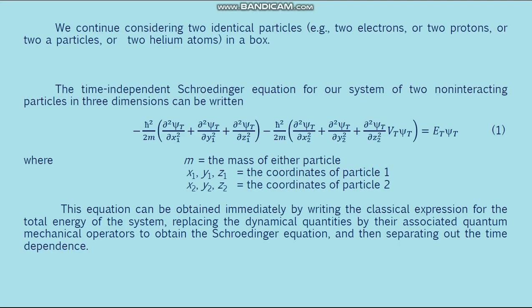We continue considering two identical particles — for example, two electrons, two protons, or two helium atoms in a box. To simplify the argument, we assume we can neglect the interactions between the particles. They will bounce between the walls of the box but will not scatter from each other. Despite this simplification, the results of the following discussion are of quite general validity.